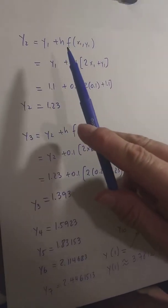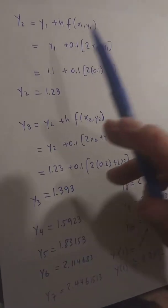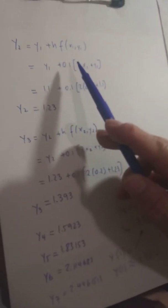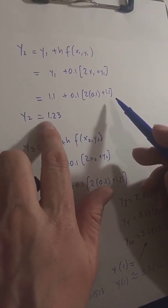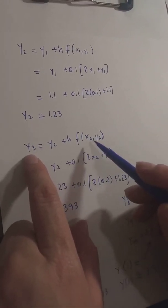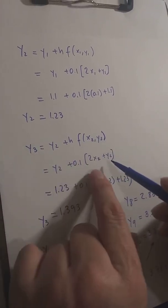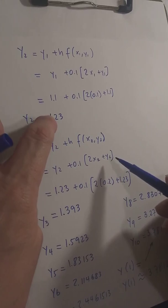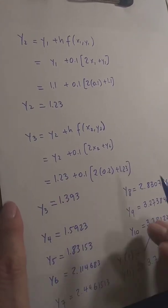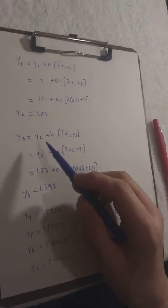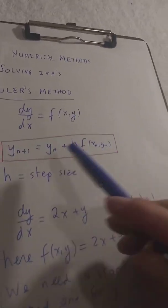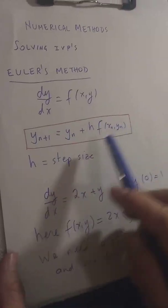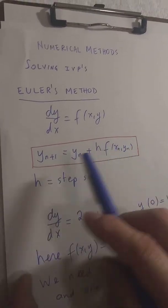Likewise, y2 equals y1 plus h·f of x1, y1. f of x1, y1 is 2x1 plus y1. h is 0.1 and y1 was 1.1, so calculate this and you get y2. Then y3 is y2 plus h·f of x2, y2, where f of x2, y2 is 2x2 plus y2, h is 0.1, and y2 was 1.3. That gives you y3. You repeat this — put y3 back into the iteration formula and get y4, put y4 in and get y5, put y5 in and get y6, etc.